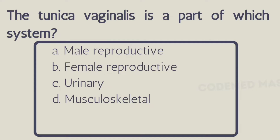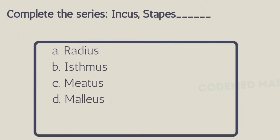Next question: the tunica vaginalis is a part of which system? Option A: male reproductive, Option B: female reproductive, Option C: urinary, Option D: musculoskeletal. The right answer is Option A, male reproductive system. The function of the tunica vaginalis is to protect and support the testicles.